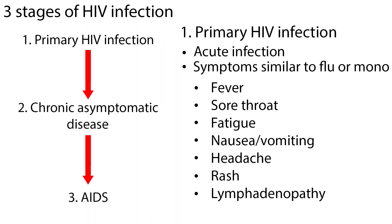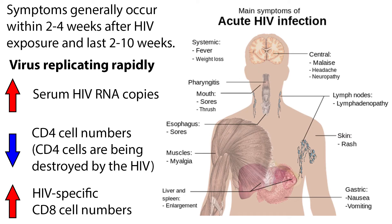The primary or acute phase is characterized by symptoms similar to the flu or mononucleosis, such as fever, sore throat, fatigue, nausea and vomiting, headache, rash, or lymphadenopathy. These symptoms generally occur within 2–4 weeks after HIV exposure and last 2–10 weeks.